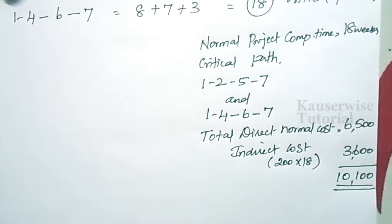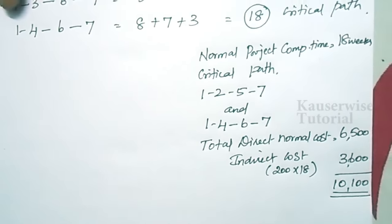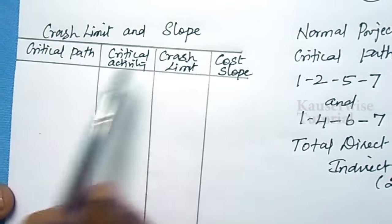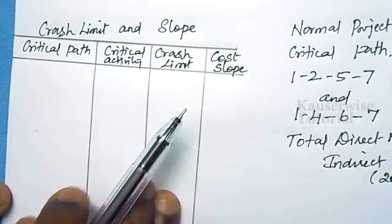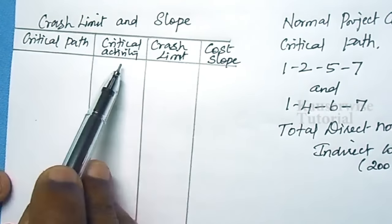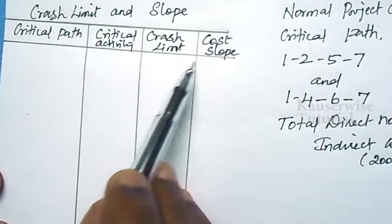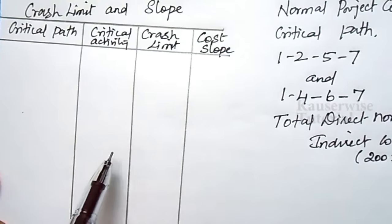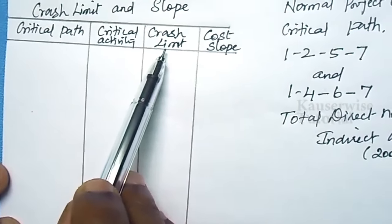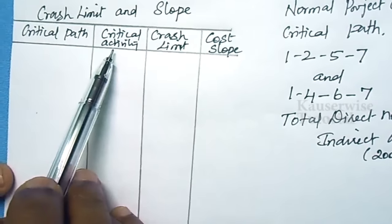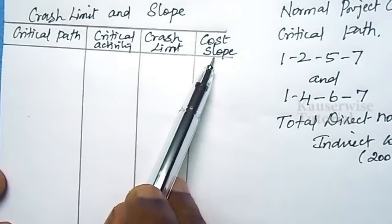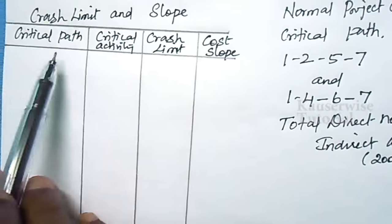Now we are going to crash the network to reduce the project completion time. To perform crashing, the next step is to find the crash limit and slope for each activity on the critical path. Crash limit is the difference between normal time and crash time for a given critical activity.